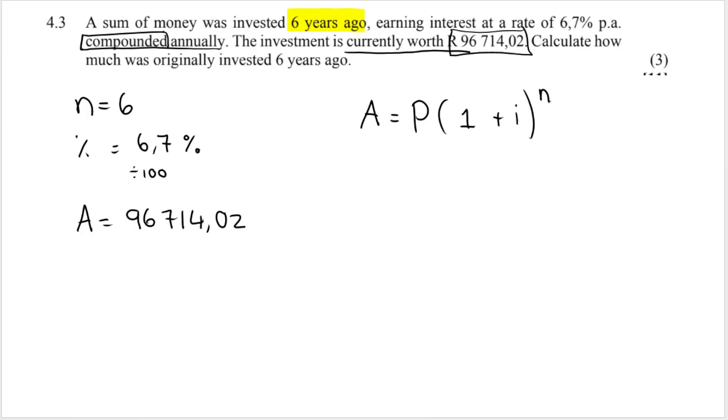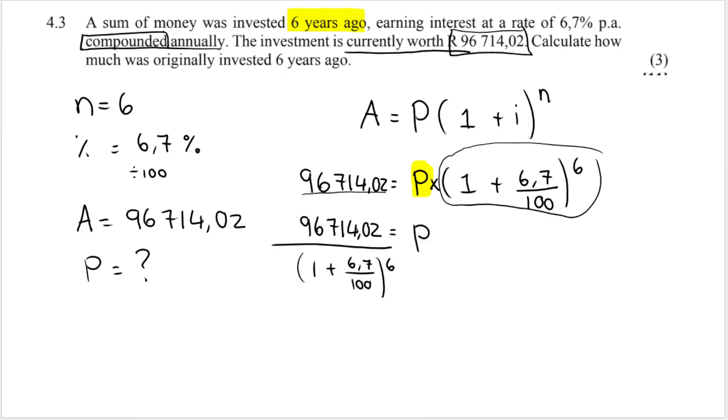They then say calculate how much was originally invested six years ago. So what did we start with? What was the principal amount? What is P? So we substitute everything correctly into my formula and remember we are looking for P. We are looking to isolate that variable. We're solving for P. Now to get P alone P is being multiplied by this entire bracket. So to get P alone we need to divide the left hand side by this entire bracket. So we'll type it into our calculator like that and we get a final answer of 65539.47 if we round off to two decimals.